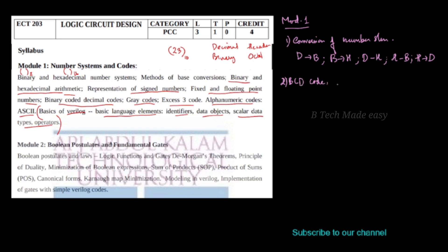BCD Codes are important. You can also find problems on Grey codes and XS3 (Excess-3) codes. If given a decimal number, you may need to find its BCD code, Grey code, or XS3 code equivalent.